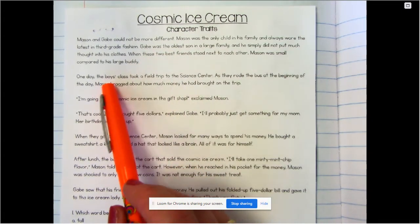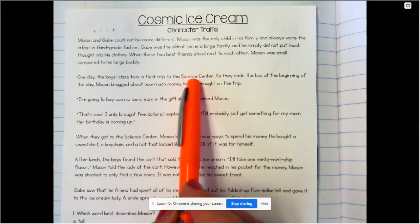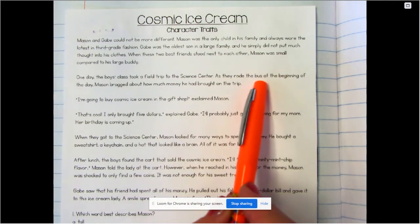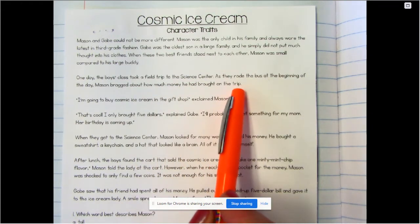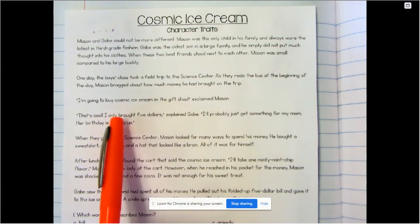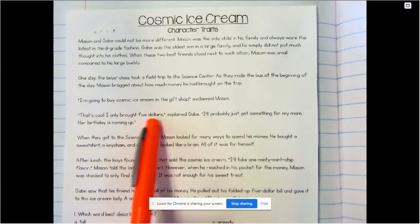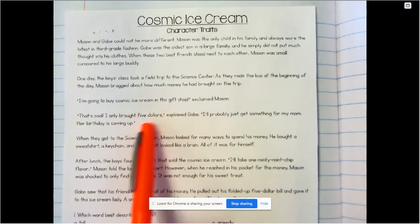One day the boys' class took a field trip to the Science Center. As they rode the bus at the beginning of the day, Mason bragged about how much money he had brought on the trip. I'm gonna buy cosmic ice cream in the gift shop, exclaimed Mason. That's cool, I only brought five dollars, explained Gabe. I'll probably just get something for my mom, her birthday's coming up.